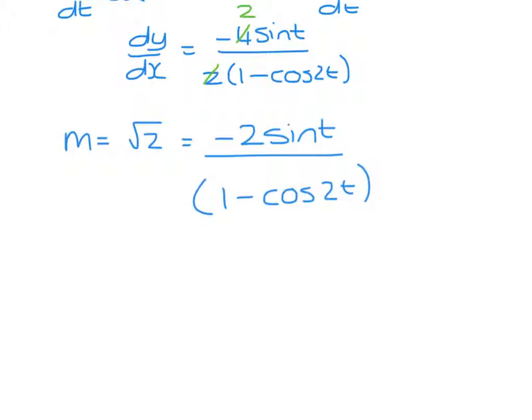I want to multiply both sides by 1 minus cos 2t, and we have root 2(1 minus cos 2t), where cos 2t is 1 minus 2 sine squared t, equals minus 2 sine t.